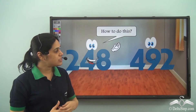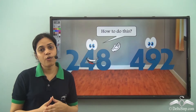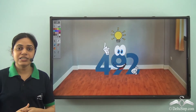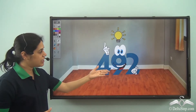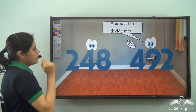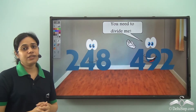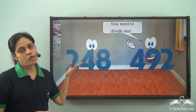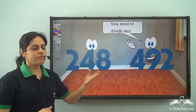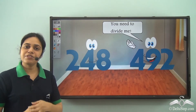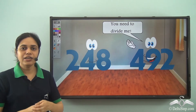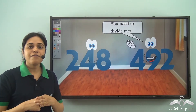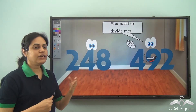248 asked 492 how to do this. Suddenly an idea came to 492. He said: 'You need to divide me. Because you are the smaller number, you divide me and we will find a way to find our HCF.' So let us see how these two numbers found their HCF by dividing.